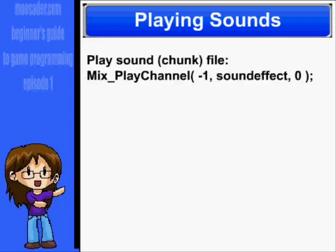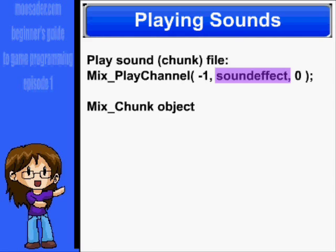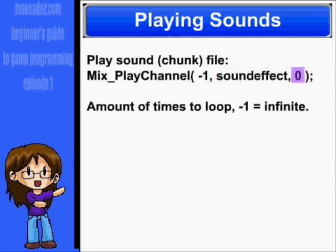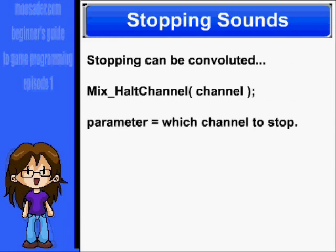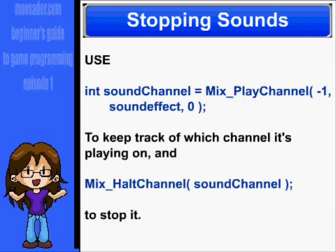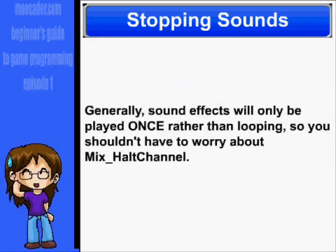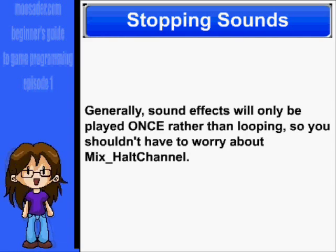To play a sound, we use Mix_PlayChannel. The first parameter is which channel to play on, and if we pass it negative one, it will just use whichever channel is available. The second parameter is which Mix_Chunk to play, and the third is how many times it should loop. If we use negative one here, it will loop infinitely until stopped. To stop a sound, use Mix_HaltChannel, with the parameter being which channel to stop. If you're using negative one in your play channel function and plan on infinitely repeating some sound files, you should store the result: int sound_channel = Mix_PlayChannel with your parameters, and then pass sound_channel to Mix_HaltChannel. If you are only playing your sound effects once with no looping, you shouldn't have to worry about this or halting the channel.